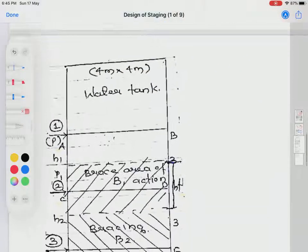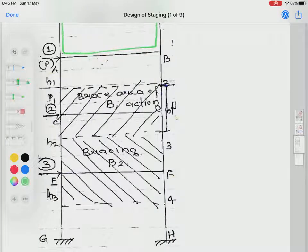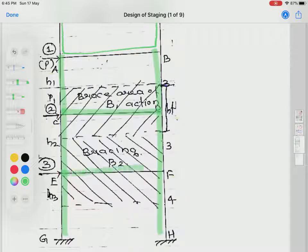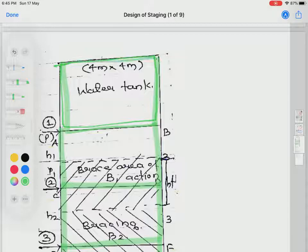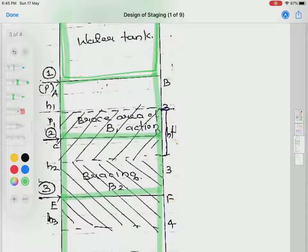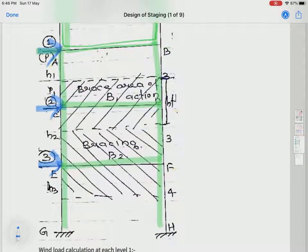You understand it very easily in the given picture. This is a tank, four meter by four meter rectangular. This tank is supported on four columns—only two columns you are seeing—and these columns are further braced by two tie beams. This is my overhead water tank. There are three levels here: first level, second level, and third level. At different levels, different wind loads will be there because wind load depends on height.